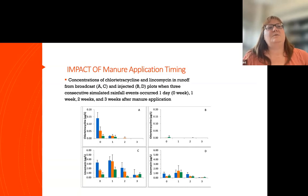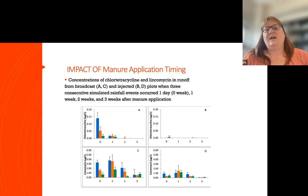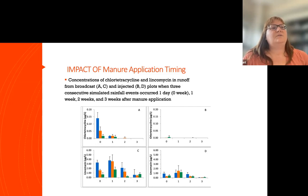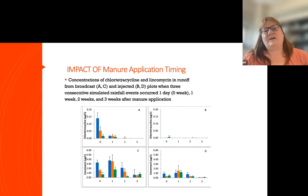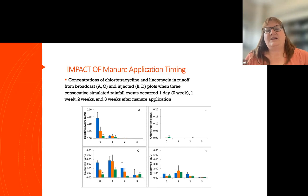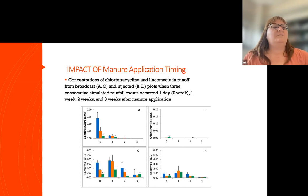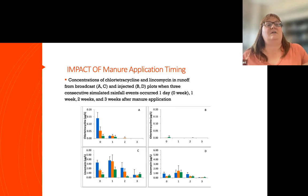With no natural rainfall, we were able to control the rainfall simulations, which occurred either one day after manure was land applied (corresponding to zero on the x-axis), or one, two, or three weeks after manure application — with no rainfall occurring in that intervening period. What you can see is that timing of manure application relative to rainfall really controls the corresponding concentration and transport of antibiotics in runoff, with much lower concentrations observed with a longer time period between manure application and the runoff event.